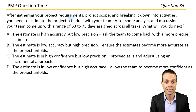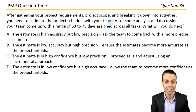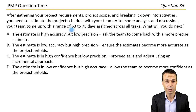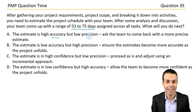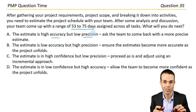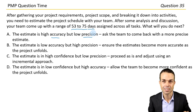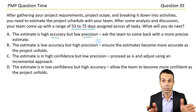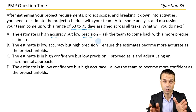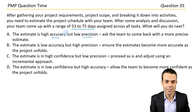After gathering your project requirements, project scope, and breaking it down into activities, you need to estimate the project schedule with your team. After some analysis and discussion, your team come up with a range of 53 to 75 days assigned across all tasks. What will you do next? This is a question on accuracy and precision. Accuracy is the range — if it's a small range it's high accuracy. This is actually a pretty wide range, nearly more than 20 days, so the accuracy is quite low.